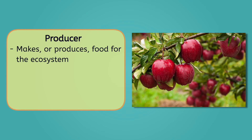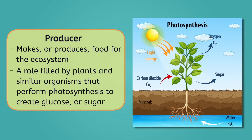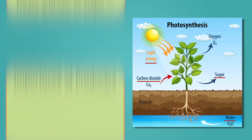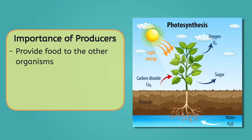There are three main roles we'll be looking at in this lesson, and the first is the role of the producer. A producer makes or produces food for the ecosystem. This job is fulfilled by plants and similar organisms, such as algae, which use the process of photosynthesis to create glucose or sugar out of water, carbon dioxide, and sunlight. Producers are absolutely essential, because without them, there wouldn't be any food or energy available to the other organisms within an ecosystem.